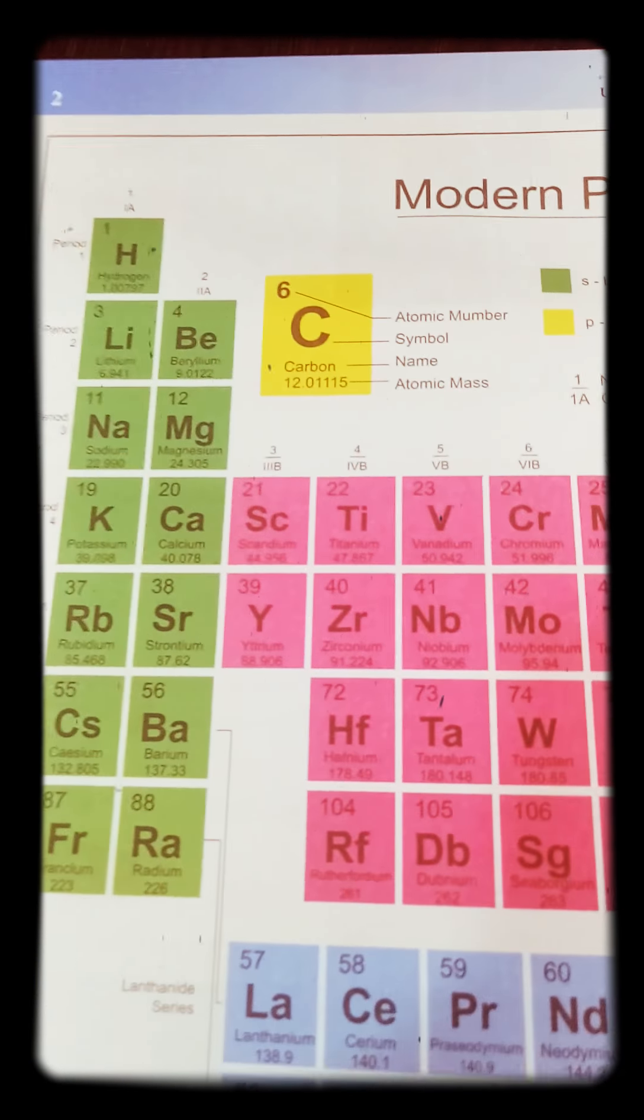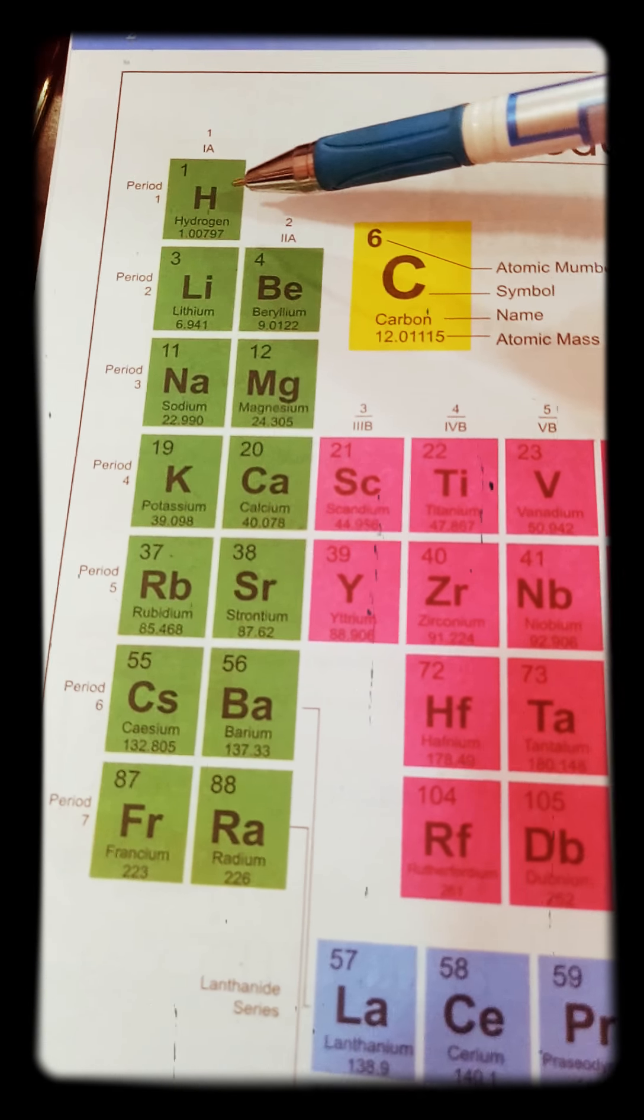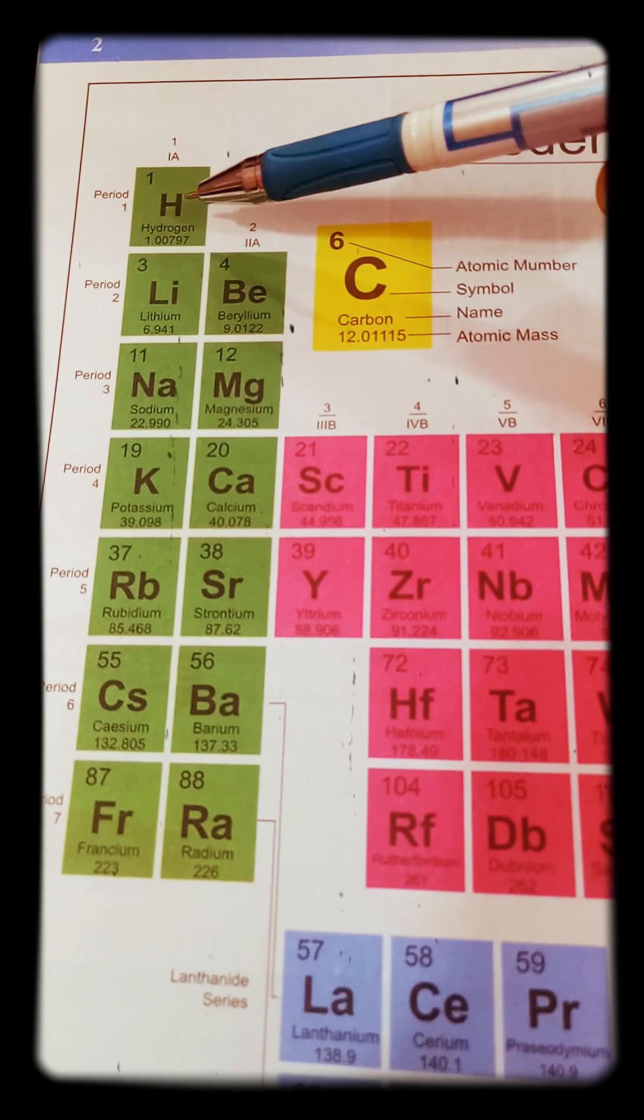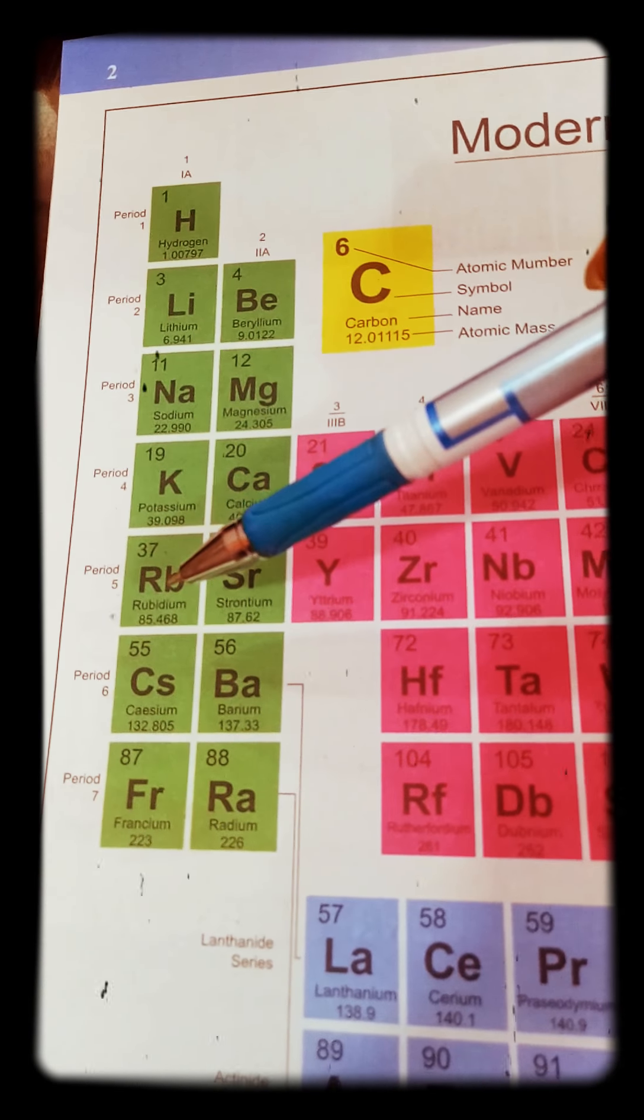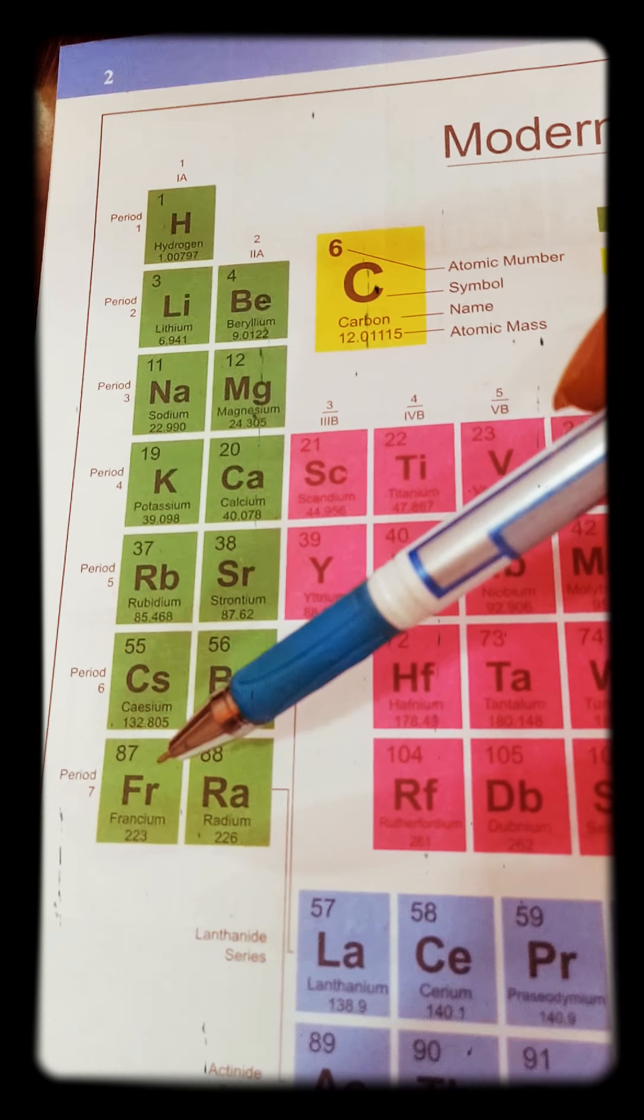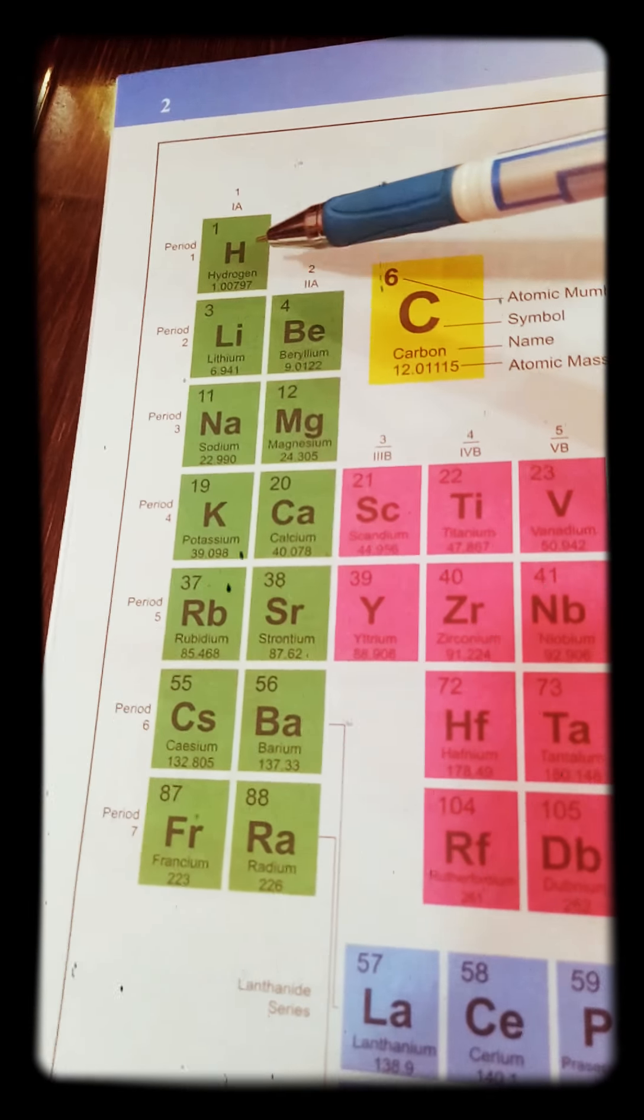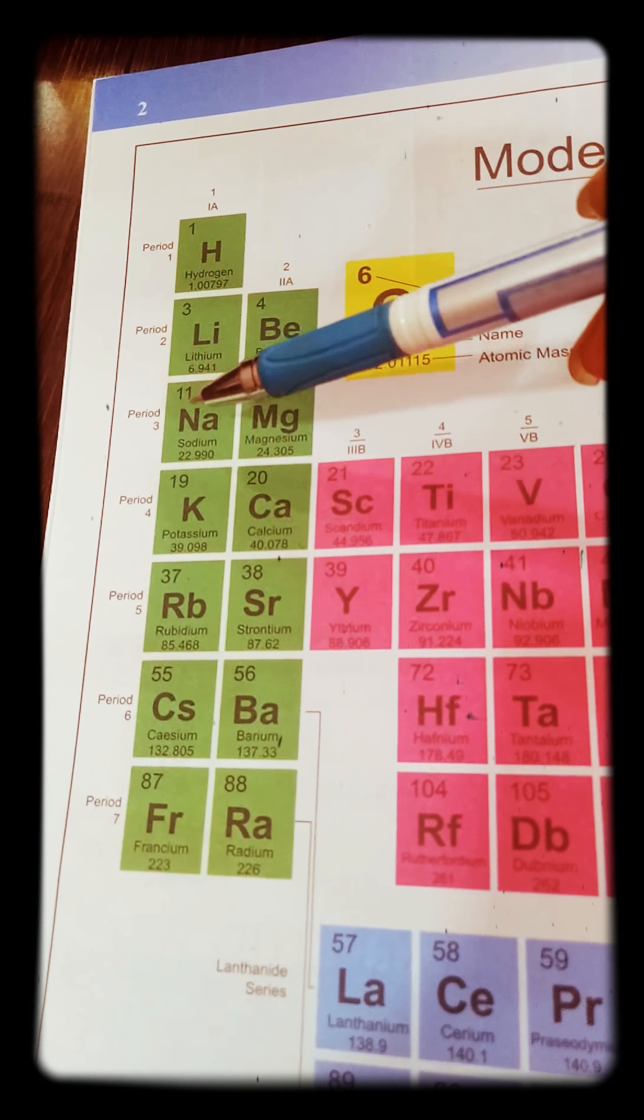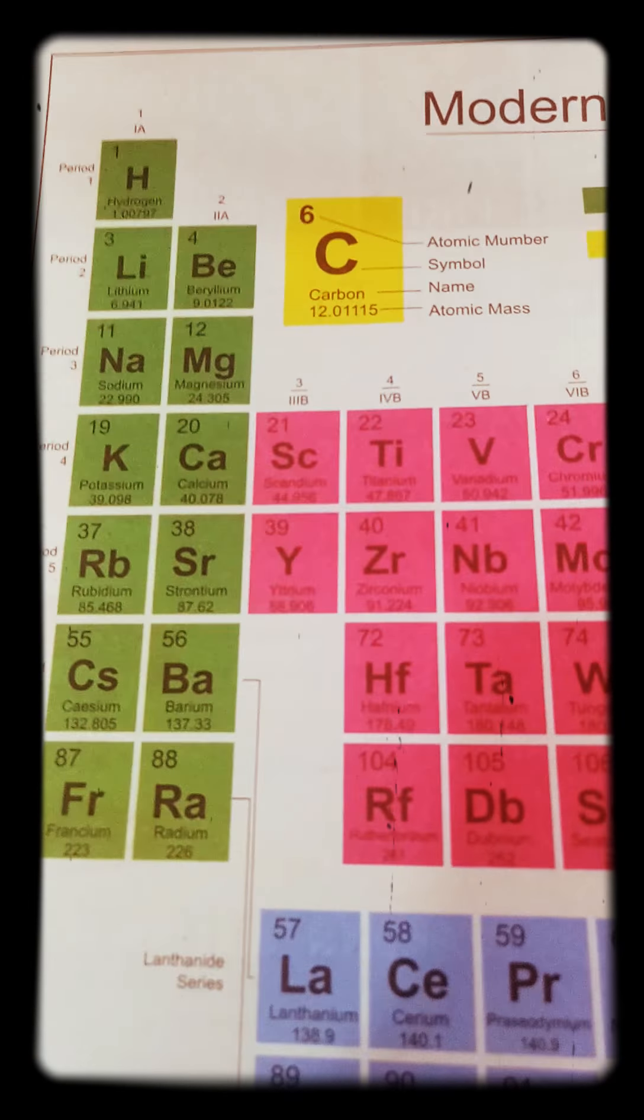But here there is a shortcut and everybody can remember it very easily. So let me just tell you, as per the group number one, it's hydrogen, lithium, sodium, potassium, rubidium, cesium and francium. So we can remember in this way: Hi Li Na Ke Rab Se Farad.